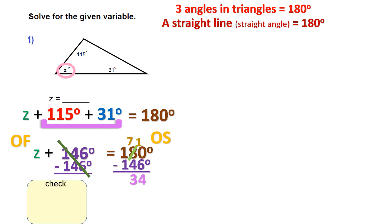Let's check by going back to the original expression and plugging in 34 for Z: 34 plus 115 plus 31. Adding 34 and 115 gives 149, and 149 plus 31 is indeed 180 degrees — the math is good. So angle Z equals 34 degrees. Don't forget your label: degrees. Anytime we're doing angles, we measure them in degrees. If I go too fast, please pause and rewatch.